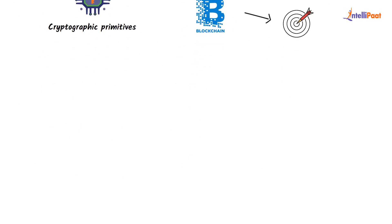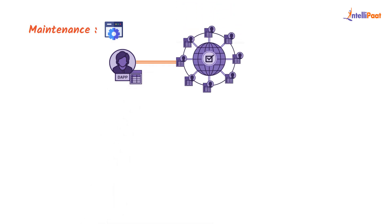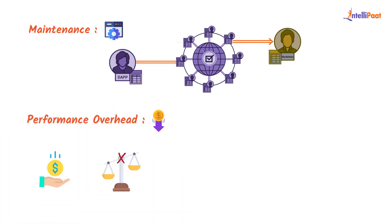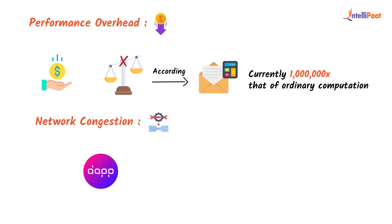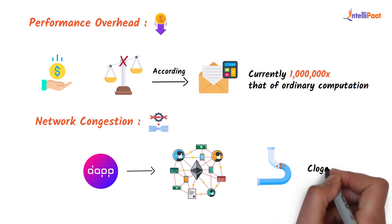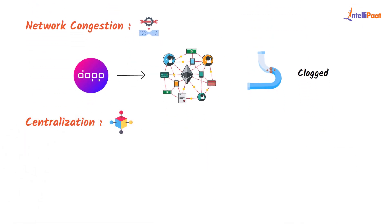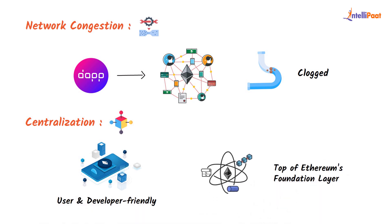Now let's look at some of the disadvantages. Firstly, we have maintenance — dApps can be more difficult to maintain because the code and data uploaded on the blockchain are more difficult to change. Next up, we have performance overhead — there is a significant performance cost and scaling is difficult. Next up, we have network congestion — when a single dApp consumes too many computational resources, the entire network becomes clogged. Lastly, we have centralization — user and developer-friendly solutions created on top of Ethereum's foundation layer may appear to be centralized services in the end.